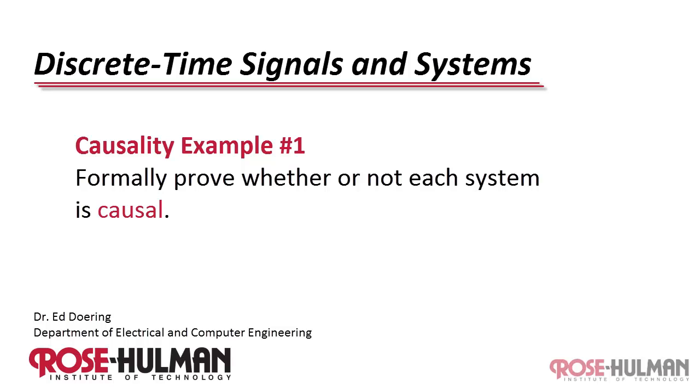This is causality example number one. Formally prove whether or not each system is causal.